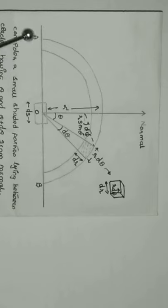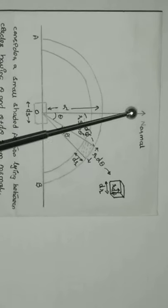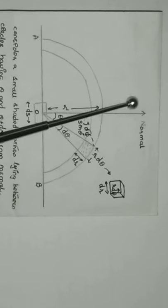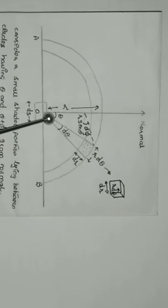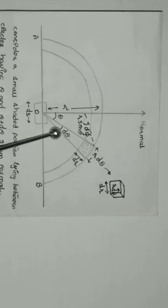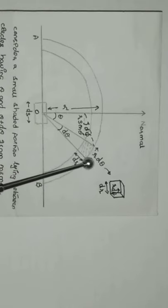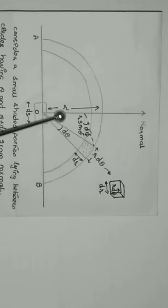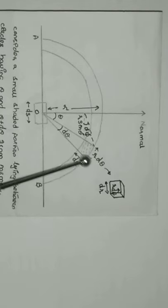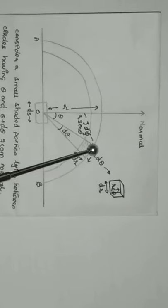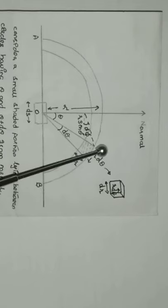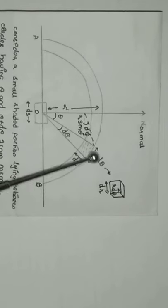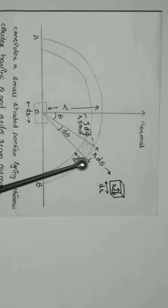Let us consider the amount of sound energy produced in the hall between points A and B, which forms the arc of a circle with O as center and R as radius. Drawing the normal at right angles at point O, when the radius moves by angle theta and further by d theta, the area of the shaded portion lying between theta and d theta has radial length dr and arc length r·dθ. The area of the shaded portion is r·dθ·dr.